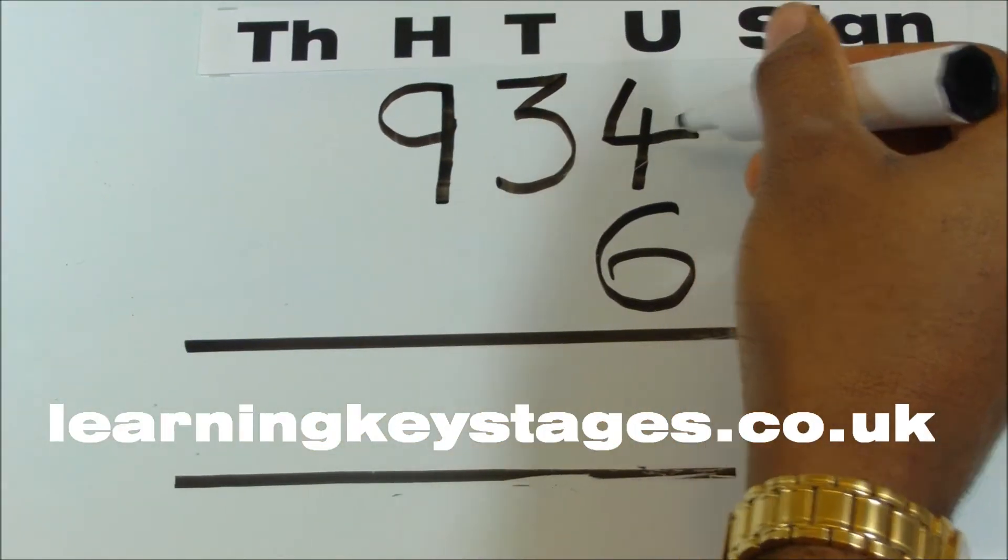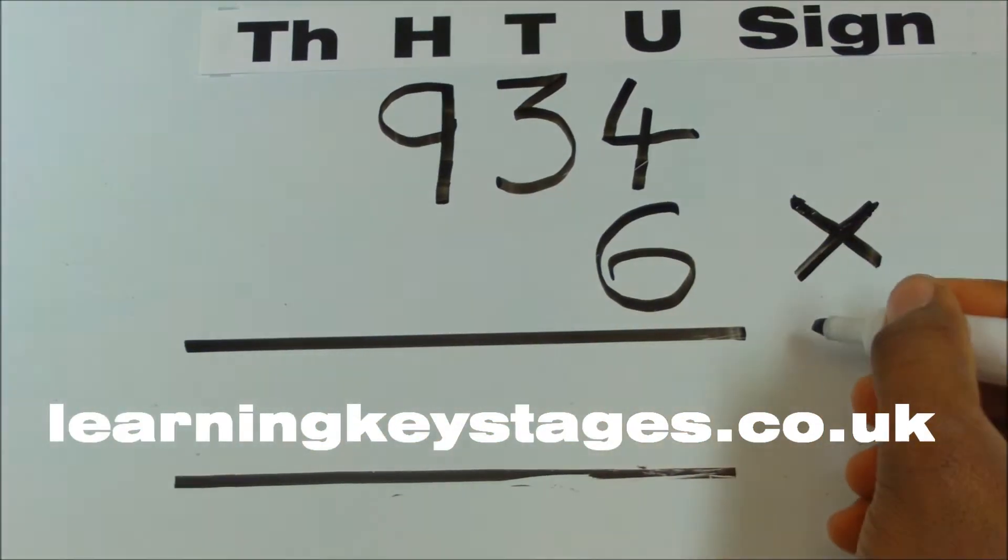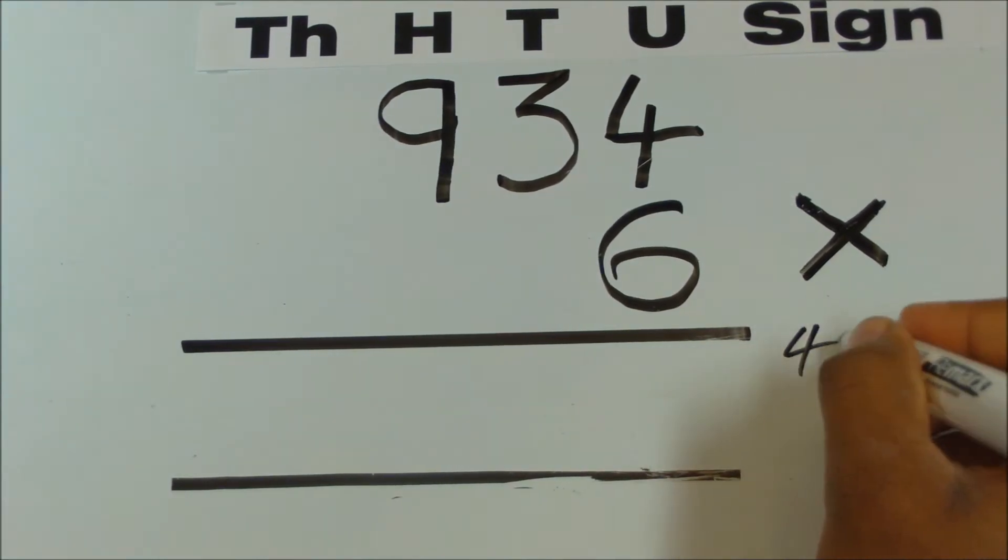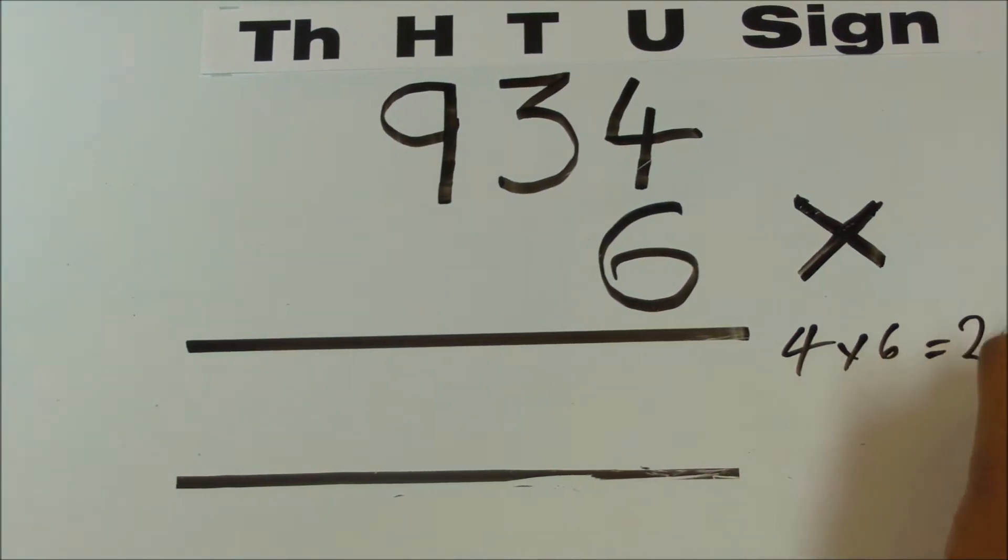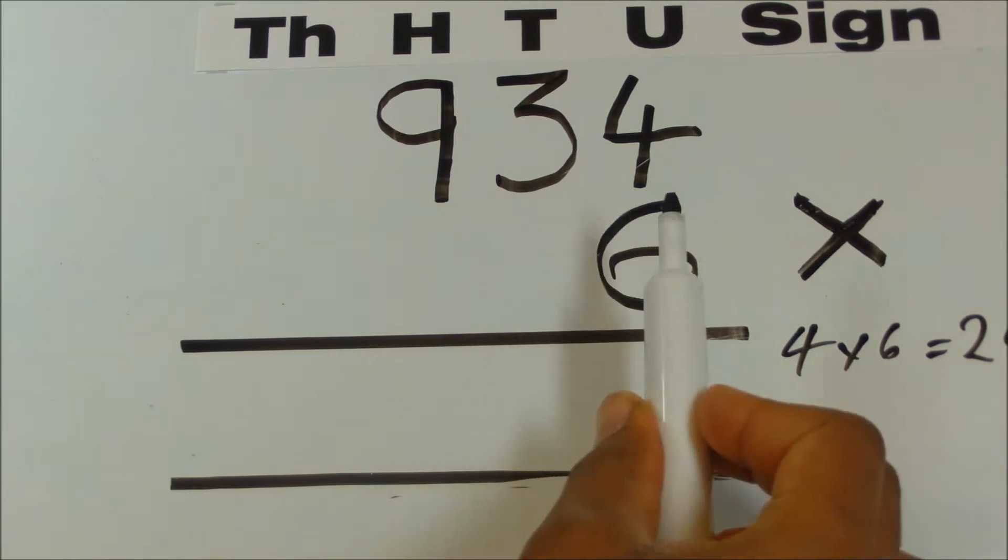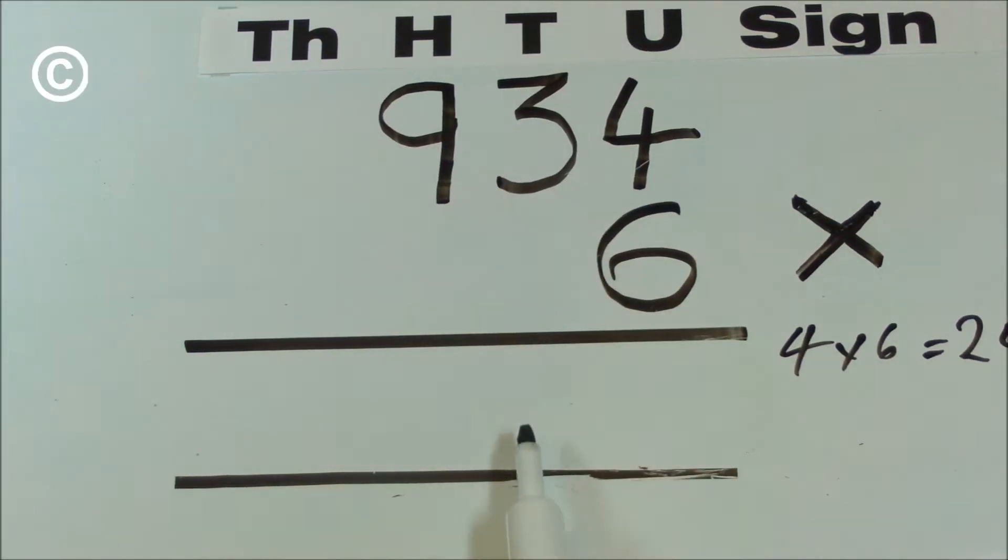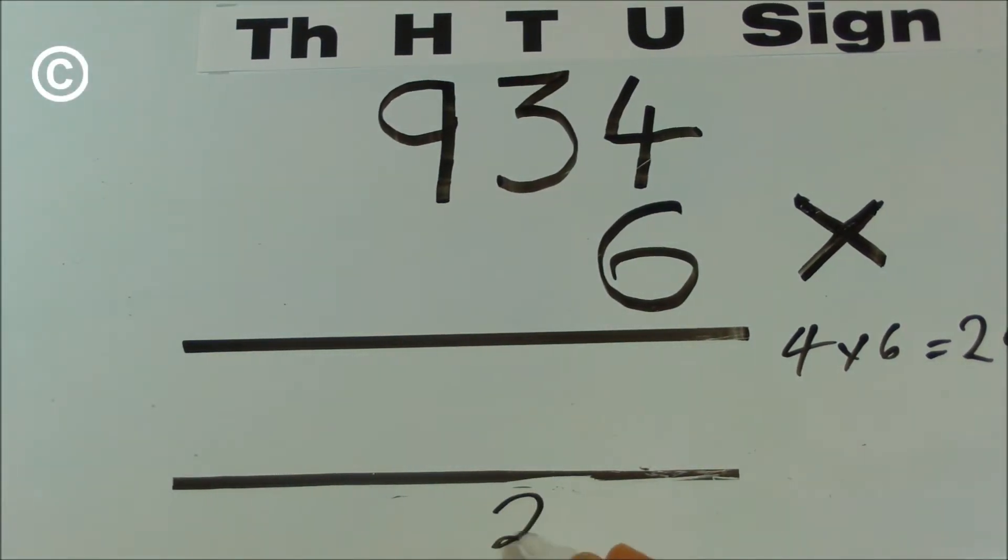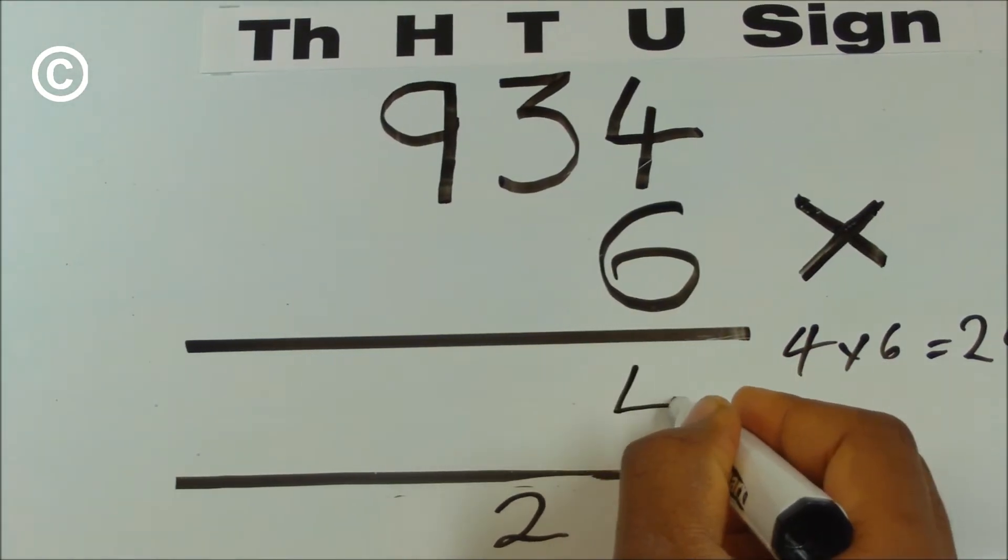Begin with 4 multiplied by 6. You can put a little jotter here as a guide. 4 times 6 equals 24. The 2 is carried over to the tens column and the 4 is placed in the units column.